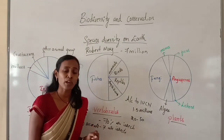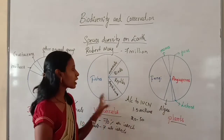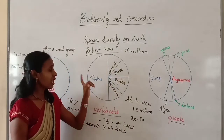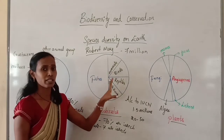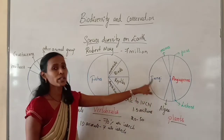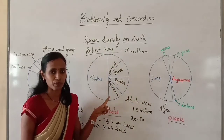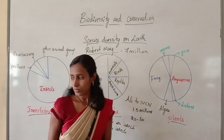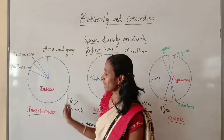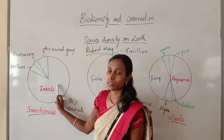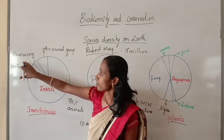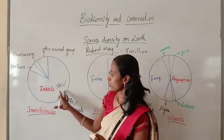The total number of fungal species in the world is more than the overall vertebrate species. Looking at the pie chart for invertebrate species, you can observe that 70% are insects, with remaining groups being molluscs, crustaceans, and other animal groups.